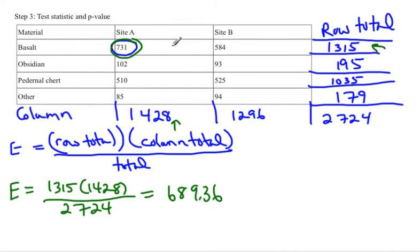Instead of doing each one of these, I'm just going to actually write it up in here, into the cell that I just found. Now, to do the next cell, let's say we do the 584 cell. That would be the row total of 1,315 times the column total of 1,296. Again, you multiply these two numbers together, and then divide by the total. And that one turns out to be 625.64.